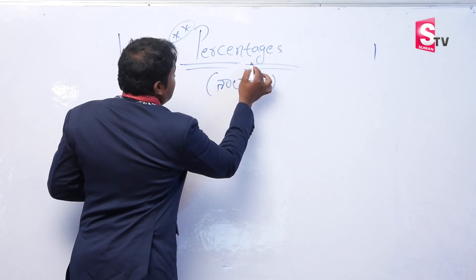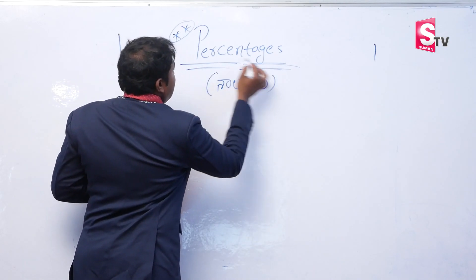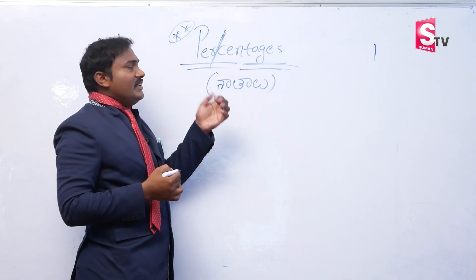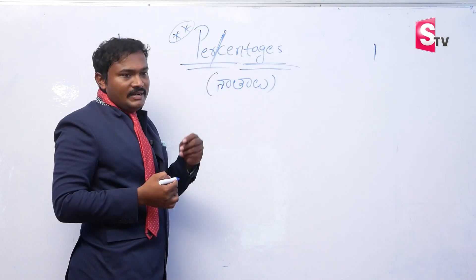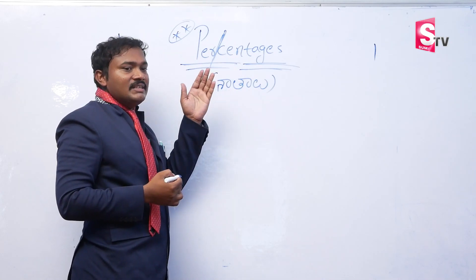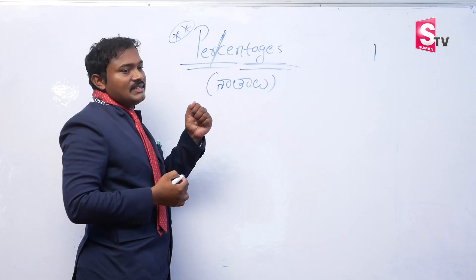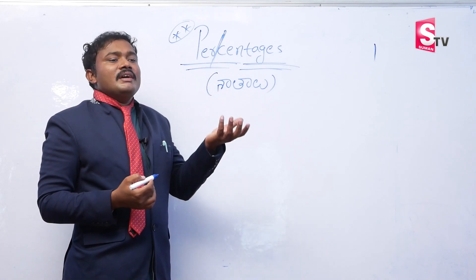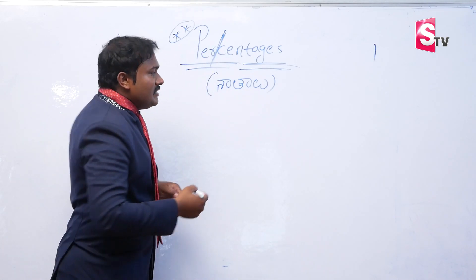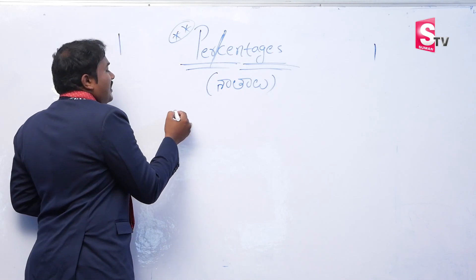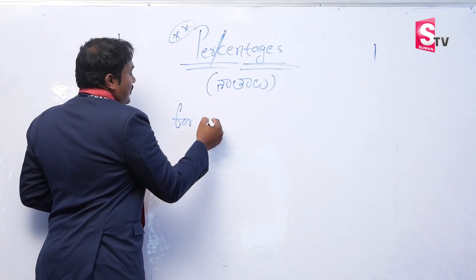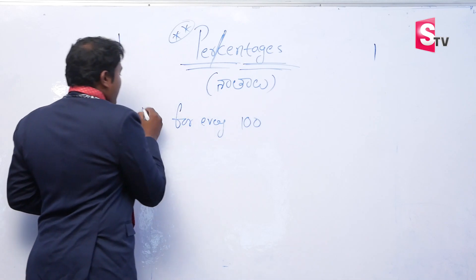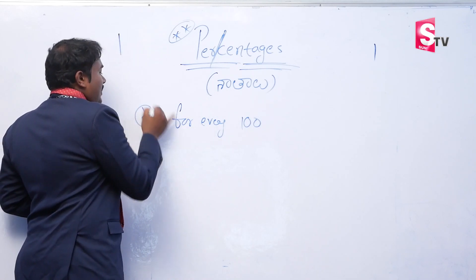The name of this chapter is percentages. 'Per' means every. 'Century' means hundred. So percentage means 'for every hundred.' Percentage means for every hundred.